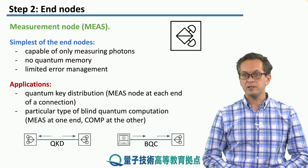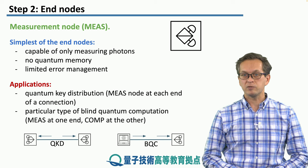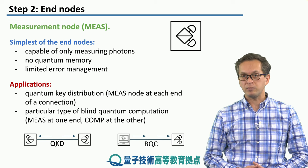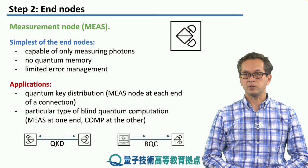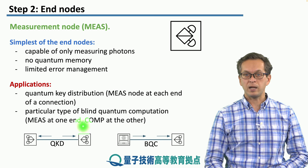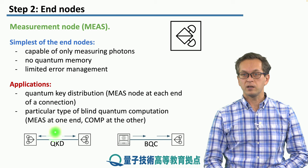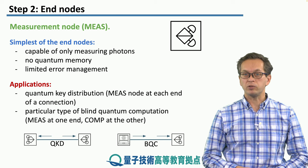And despite the simplicity, it's got some very nice and useful applications. One application is in quantum key distribution, where the measurement nodes are placed at the end of a connection, and they generate a secret quantum key.